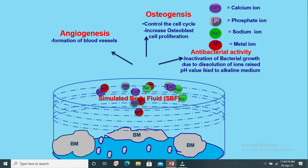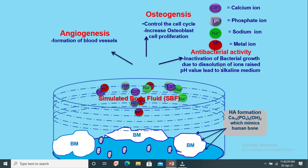Since the biomaterial contains alkali ions, on exposure to body fluid, ionic exchange takes place, creating an alkaline medium that leads to inactivation of bacterial growth, giving it antibacterial activity. Furthermore, after immersion in SBF, apatite growth is observed on the surface of the biomaterial as a white layer. This hydroxyapatite (HA) layer mimics human bone.